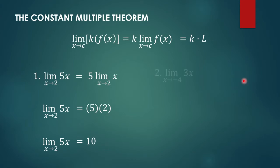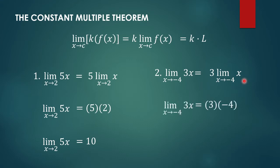Another example: the limit of 3x as x approaches negative 4. We can write this as 3 times the limit of x as x approaches negative 4. Evaluating, we have 3 times negative 4, which equals negative 12.